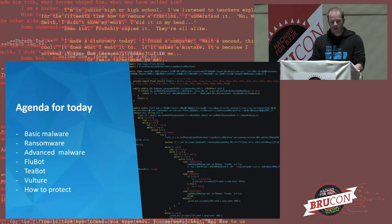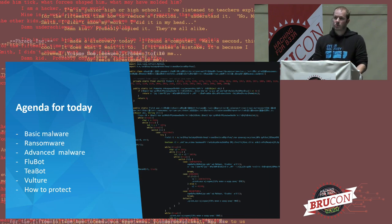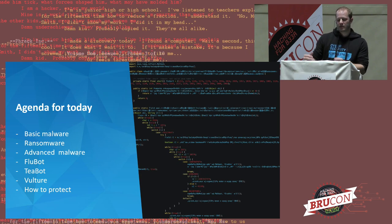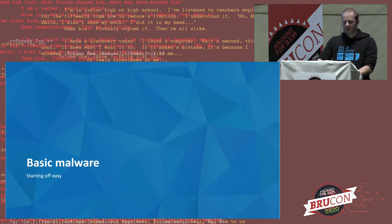The agenda for today: I will explain basic Android malware. The entire presentation will be on Android malware, unless I go really quickly and then I have some extra slides on iOS. I'll explain ransomware, which is also a problem on Android. I will talk about advanced malware, which is where it becomes interesting. Then I'll give some examples on FluBot, TBot, and Vulture — three more recent malware families that are now targeting Belgium. And finally, hopefully if we have time, how to protect, because I don't only want to give you bad news.